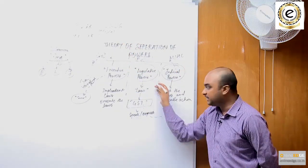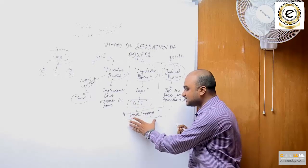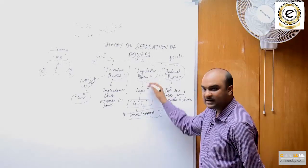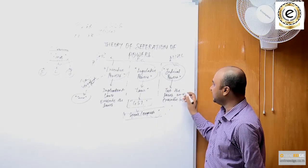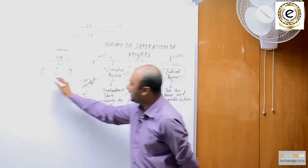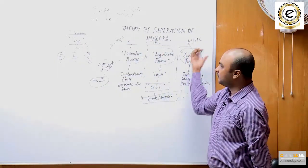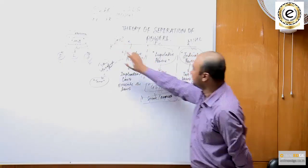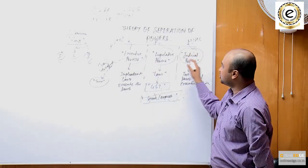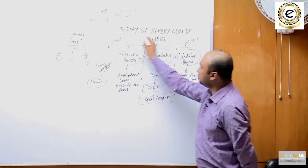Suppose the parliament makes a law — hypothetically, the GST law — in which it takes away your freedom to speak and express. Such a law would be invalidated by the court. This is the theory of separation of powers: the powers of governance — executive, legislative, and judicial — are not invested in one authority or person but are invested in different authorities. The executive powers are invested in the government, the legislative powers in the parliament, and the judicial powers in the courts. This theory was given by the French political philosopher Montesquieu.